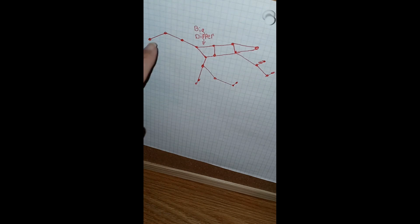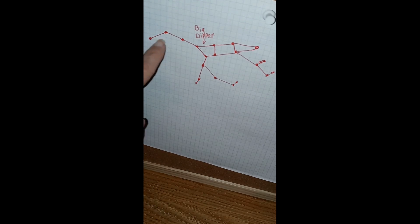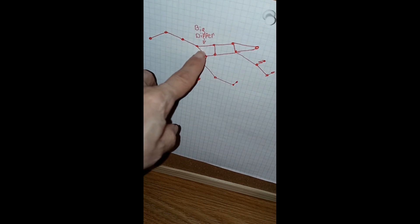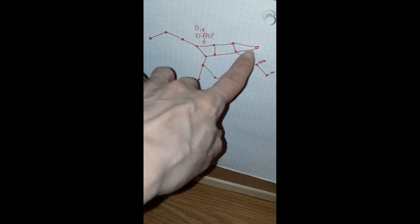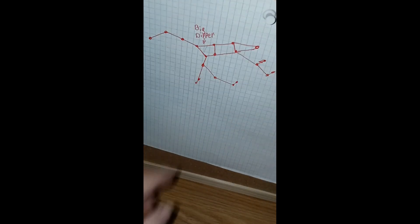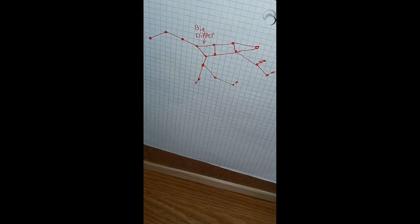So if you look, here's the handle of the Big Dipper, and down there is the Big Dipper. You have the head of the bear, the tail of the bear, the legs of the bear. And with that, I'm going to let you go.